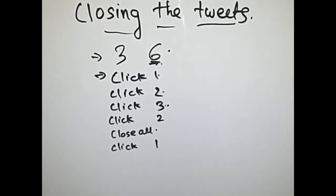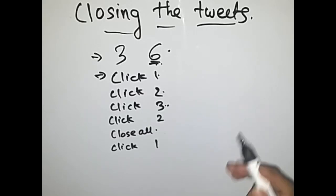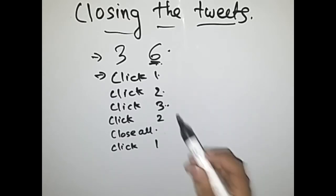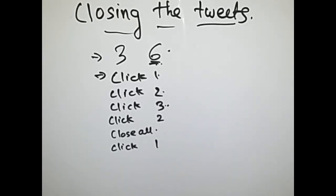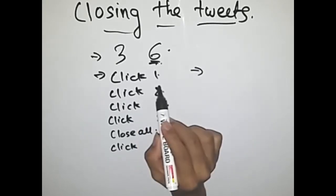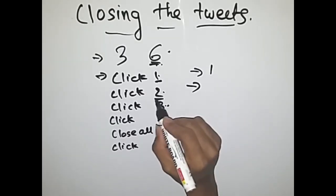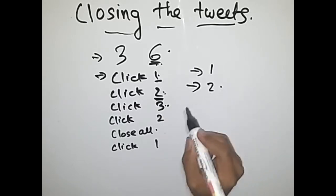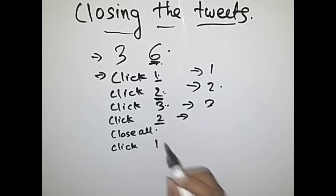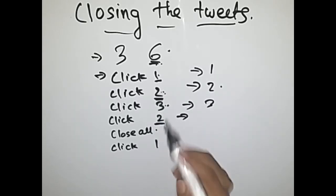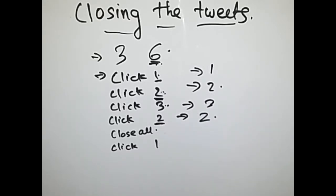We have six queries: one, two, three, four, five, six, as mentioned in the problem. Initially all the tweets will be closed. As we click on a tweet it gets opened, and if we click on it again it gets closed. So if we click on a closed tweet it opens, and if we click on an open tweet it closes. We have to check at each step the count of tweets which are open. Initially the count is zero. After clicking tweet one, it gets opened so count is one. Then tweet two gets opened and one is already open so count becomes two. Then we click on tweet two which is already open, so it gets closed and count becomes two minus one. 'Close all' closes all available tweets.